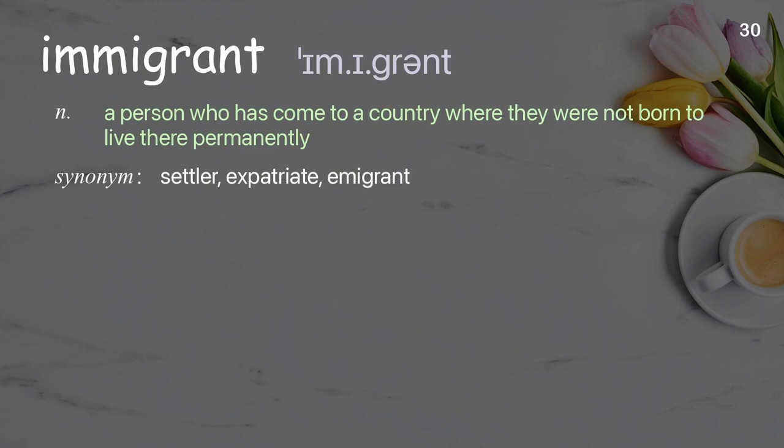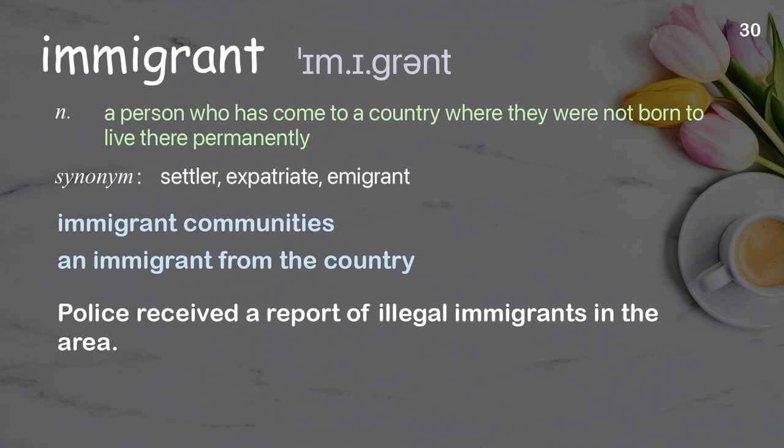Immigrant: a person who has come to a country where they were not born to live there permanently. Examples: immigrant communities; an immigrant from the country. Police received a report of illegal immigrants in the area.